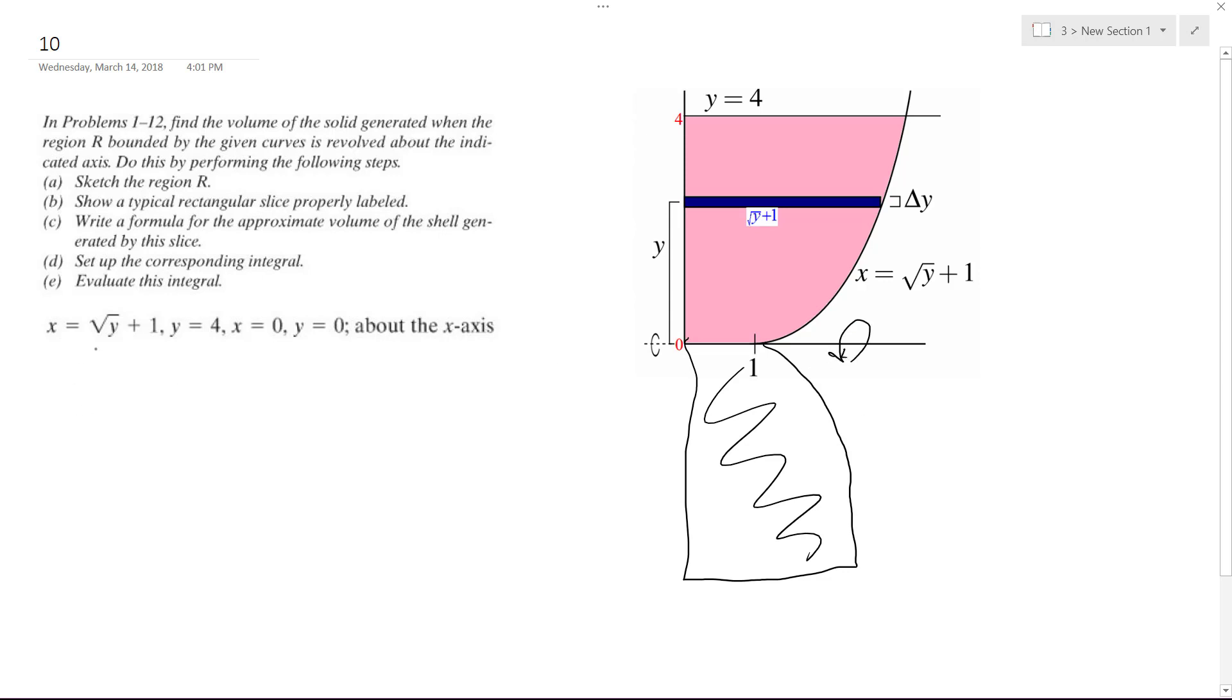So to do that, we're going to use a shell method, and we're integrating this with respect to y, so nothing too complicated here. You just got to be careful how we set it up. So it's going to be 2π, and it's just y, because we're flipping it here. And we're integrating from 0 to 4.